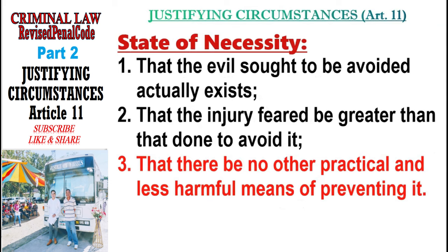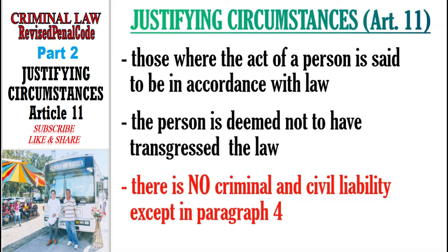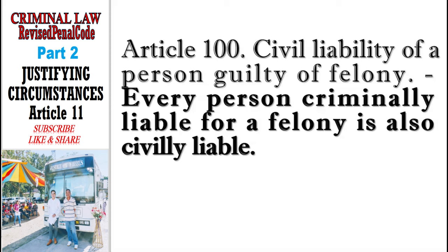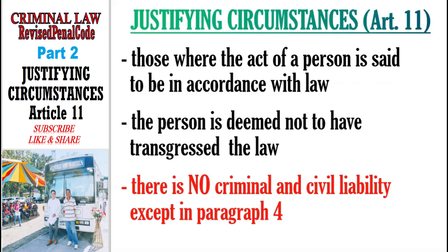In Part 1 we mentioned there is no criminal and civil liability when a person acts in accordance with law, because he is deemed not to have transgressed the law. Under Article 100, every person criminally liable for a felony is also civilly liable. But since the person acting under a justifying circumstance is not criminally liable, there is therefore no civil liability.